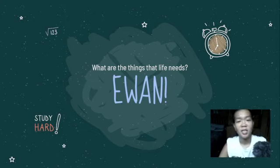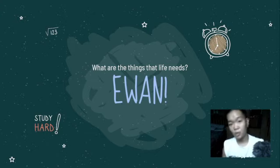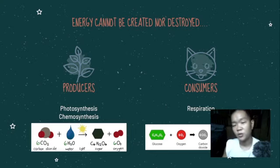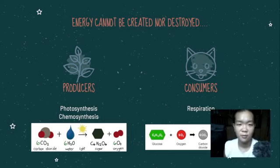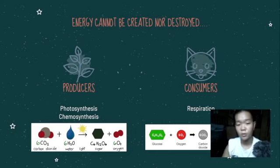Where does energy on earth come from? It comes from the sun. The sun, the center of the solar system, is what really powers life on earth. But even though the sun is this massive ball of energy, how does it get to us? We need organisms that can actually harness the power of the sun — these are what we call producers. As we know from physics, energy cannot be created nor destroyed, so the energy from the sun is really just being cycled around the planet, all thanks to the producers, through the process called photosynthesis.